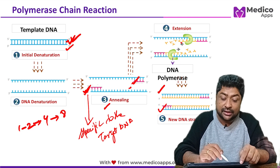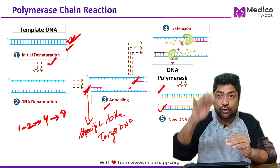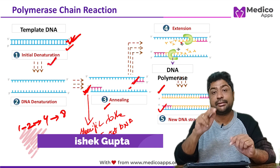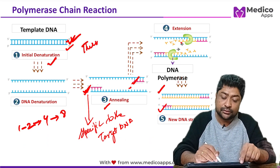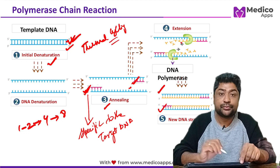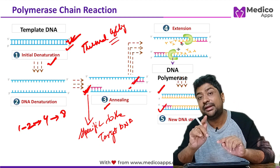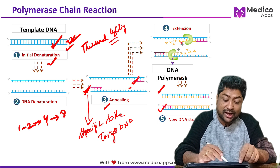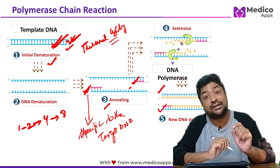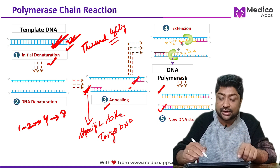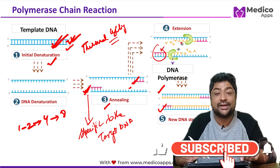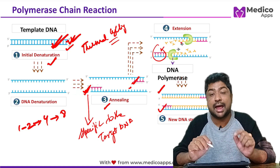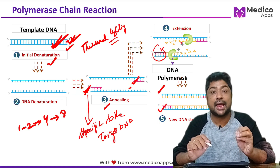For denaturation, temperature must increase; for annealing, it comes down; for extension it remains down; then for the next denaturation cycle it increases again. This cyclical temperature change is why it is a thermal cycling method. Since the entire target DNA is being amplified, PCR is a target amplification technique. NASBA is also a target amplification technique.